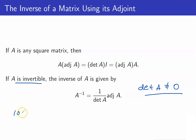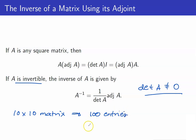For example, if I have a 10 by 10 matrix, it would mean that I have 100 entries, and for each entry I would have to compute cofactors — that would be very, very tedious. So we do not really use this formula to compute the inverse of A for practical results. We only have it for theoretical purposes.